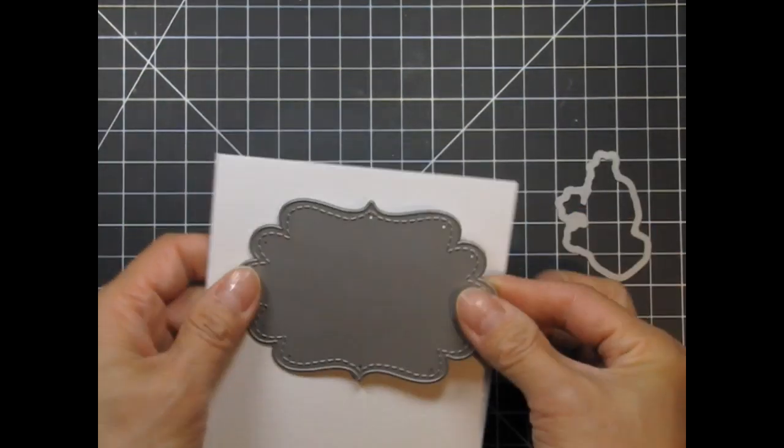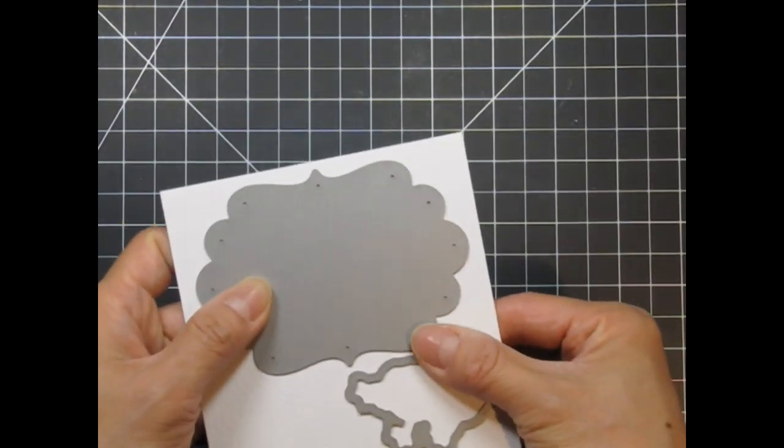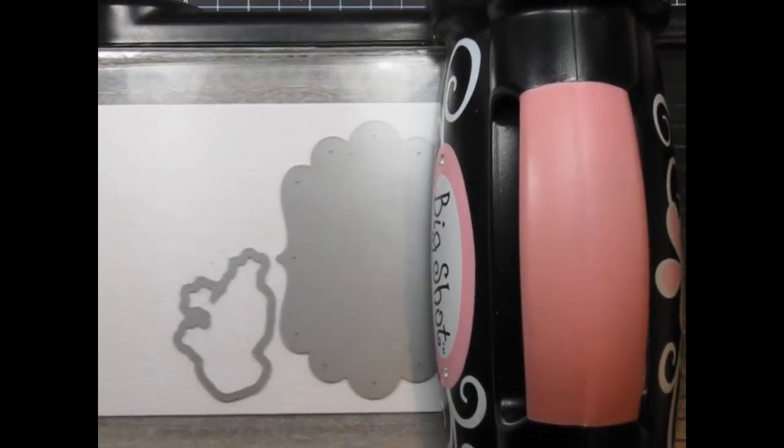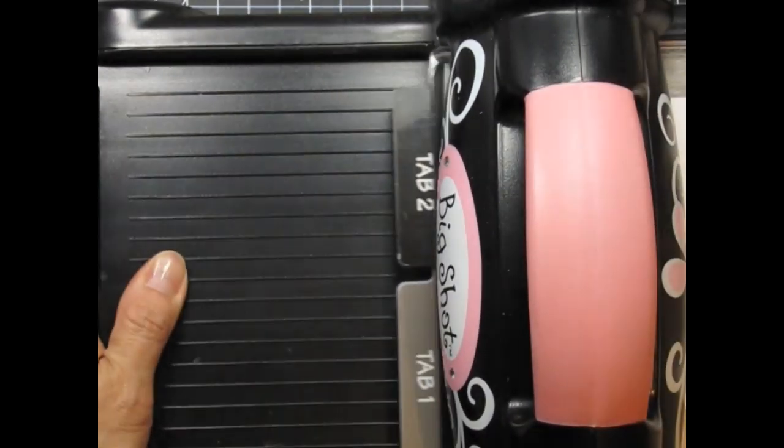Since I'll be watercoloring, I'm going to die cut the Lizard and the Frame 1 die from Tim Holtz Distress Watercolor Cardstock. This is the heaviest and whitest watercolor cardstock I've seen, and I really love it.